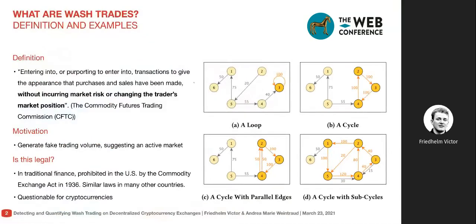So to start out, what are actually wash trades? The Commodity Futures Trading Commission in the United States defines these as transactions that appear to be purchases and sales, but the traders that perform them don't actually incur any market risk or change their market position. For example, in figure A, account three appears to be trading with himself with 100 assets — an obvious wash trade, usually prevented by self-trade prevention functionality.